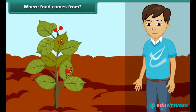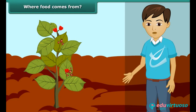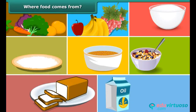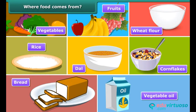Let us now discuss where we get the various food items to eat. Most of the food we get from plants — like vegetables, fruits, wheat flour, rice, dal, cornflakes, bread, vegetable oil, etc.